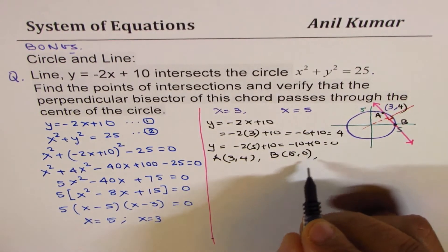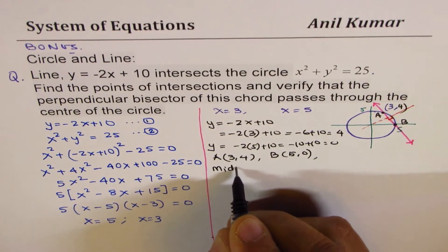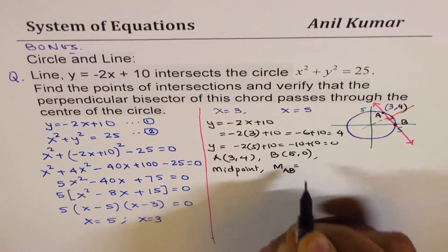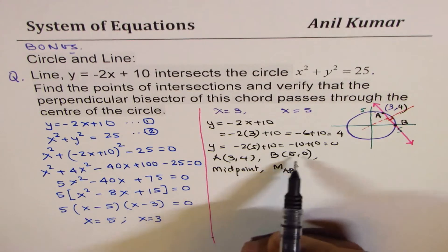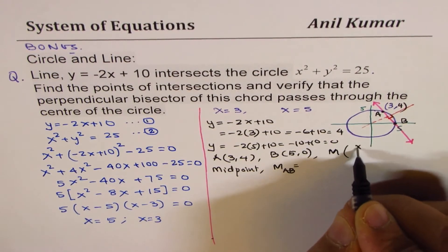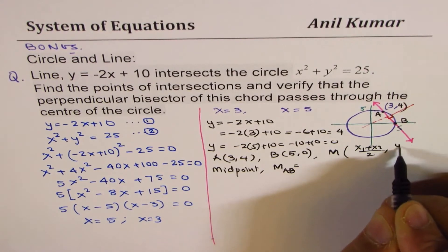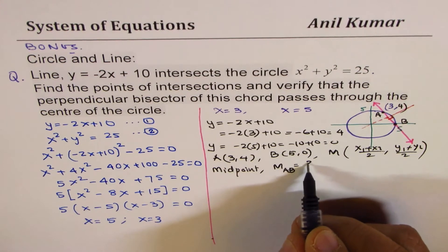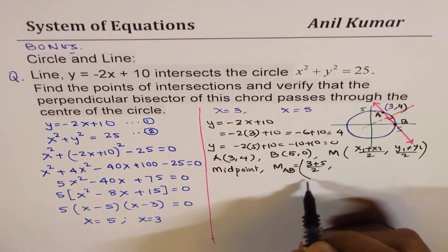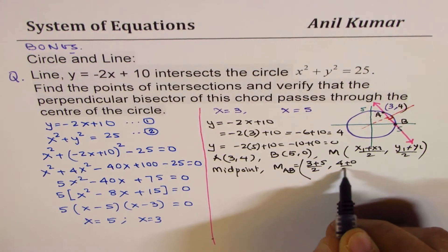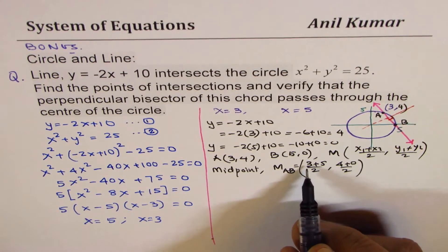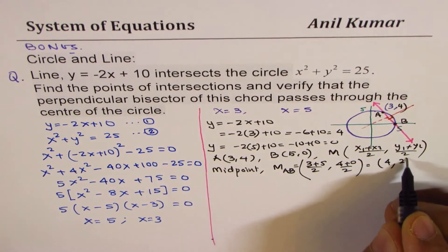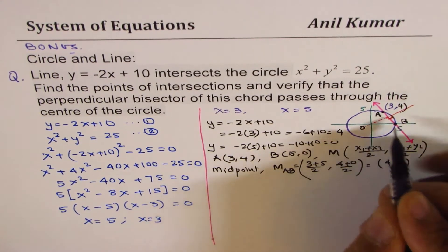Now let's find the midpoint. So midpoint, let's call this as M of AB. We use the midpoint formula. Midpoint M will be x1 plus x2 divided by 2 and y1 plus y2 divided by 2. So add these two, which is 3 plus 5 divided by 2, and y will be 4 plus 0 divided by 2, which gives us 8 divided by 2 is 4, and 4 divided by 2 is 2. So the midpoint is 4, 2.